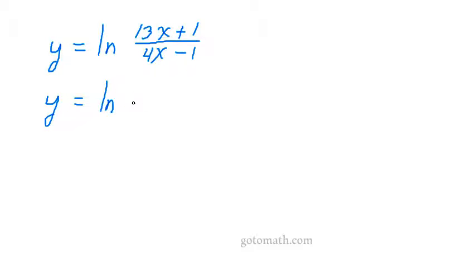The way the property goes is we've got this fraction here, and we can say okay, 13x plus 1, put that in parentheses, and then we go minus - we got a fraction here - minus the natural log of 4x minus 1.